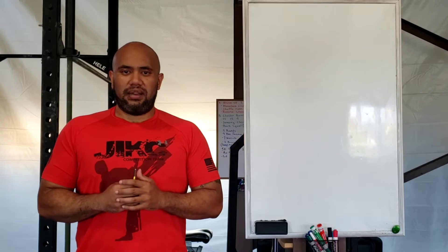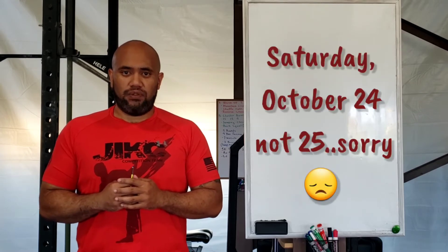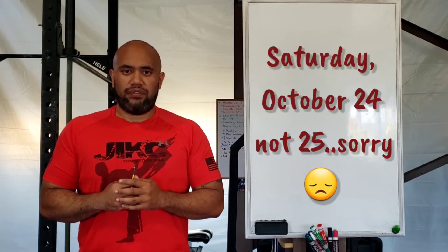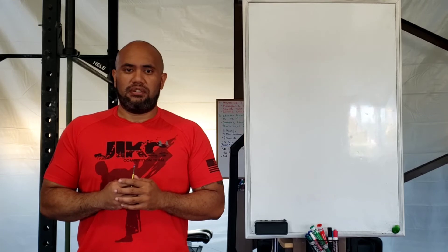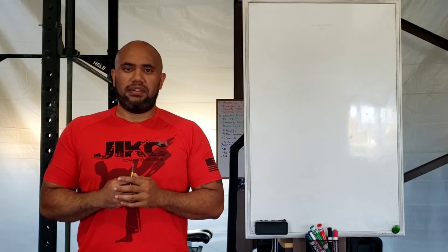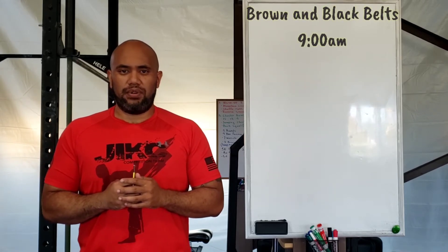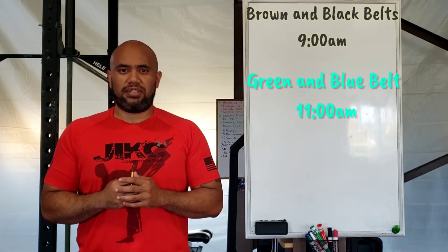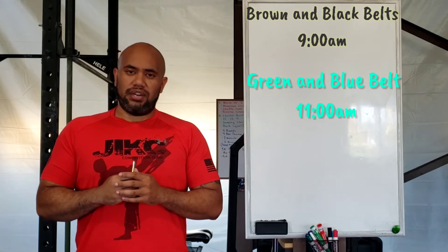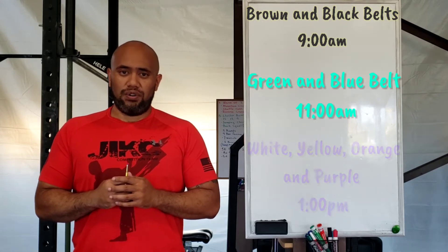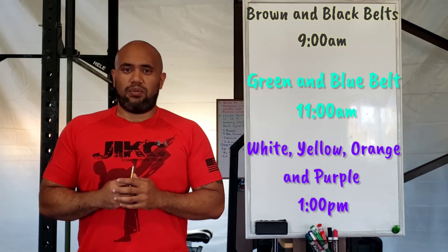The online exam is on Saturday, October 25th. If you're brown and black belt, your exam starts at 9. If you're green and blue, your exam starts at 11. And if you're white, yellow, orange and purple, your exam starts at 1.